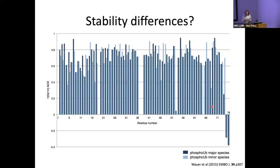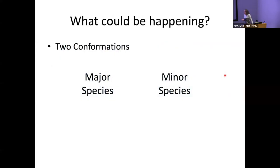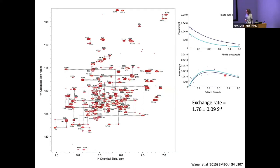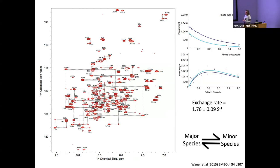We can look at the dynamics of these two states using heteronuclear NOE data for phosphorylated ubiquitin. The only real difference seems to be at the C-terminus, where the major species is more flexible than the minor species. Toby was only able to crystallize one species, suggesting the major and minor species might be in conformational exchange. We can probe that with an experiment called ZZ exchange — like a normal HSQC, except you build in a delay time that allows exchange of magnetization from the major to the minor species. If they are exchanging, you get an extra cross peak, and indeed we do see that for Q62. By varying the delay time we can fit the exchange rate, and we found they are exchanging at about twice a second.